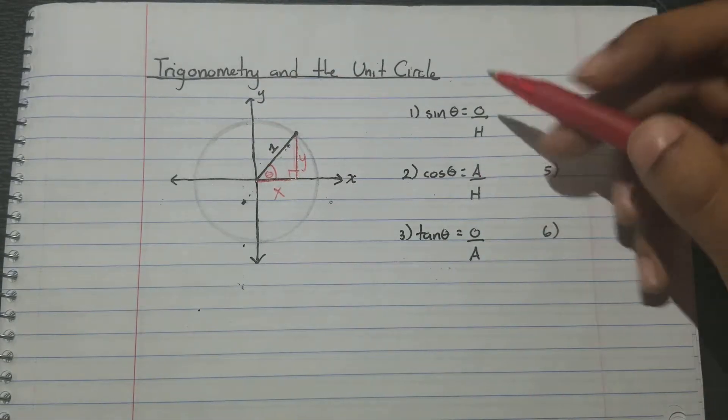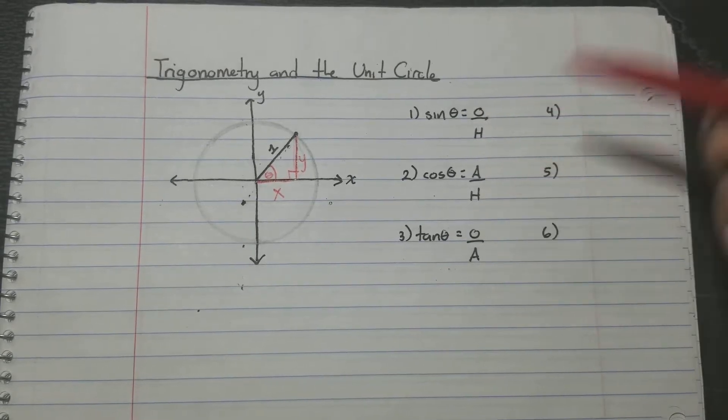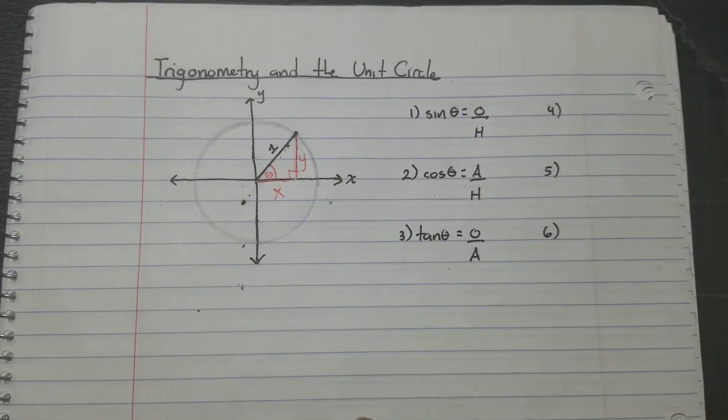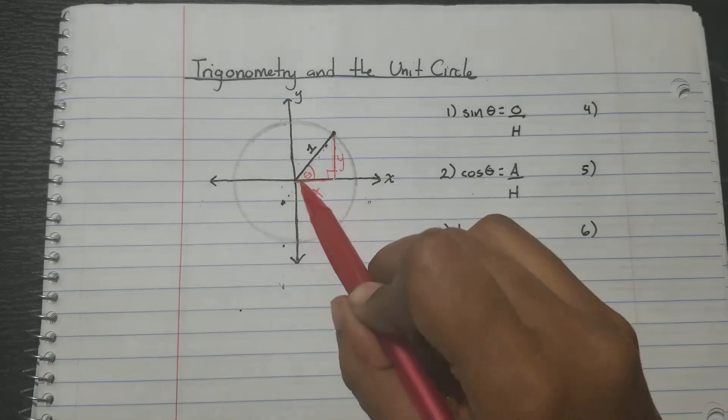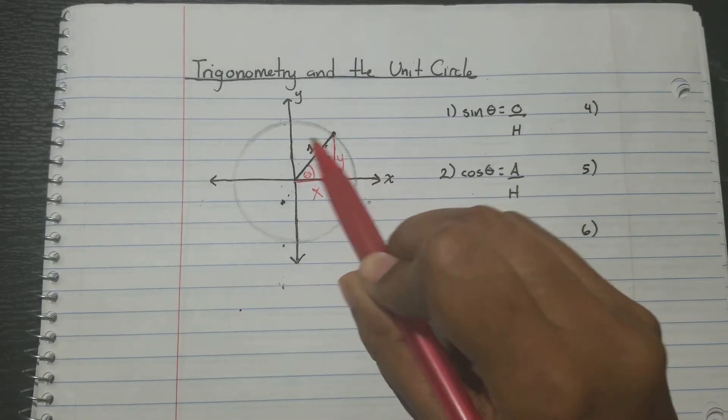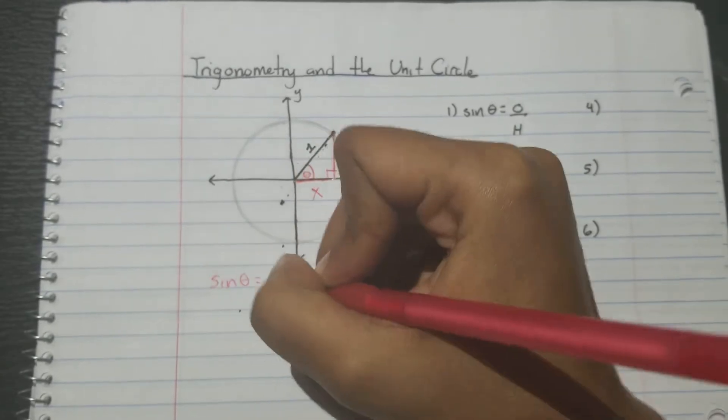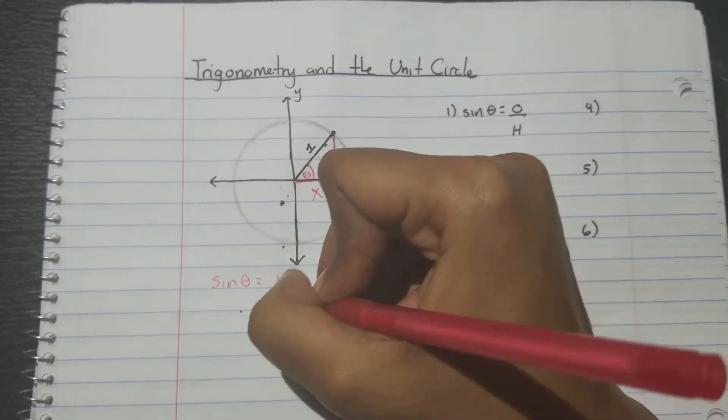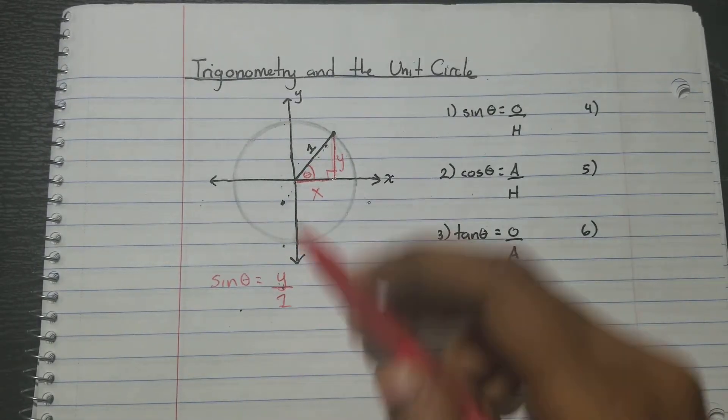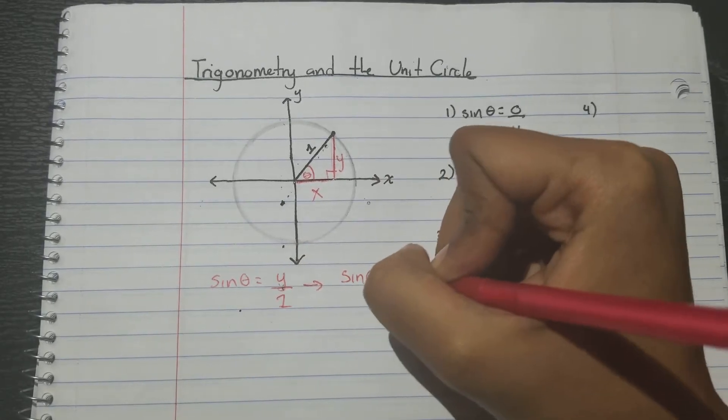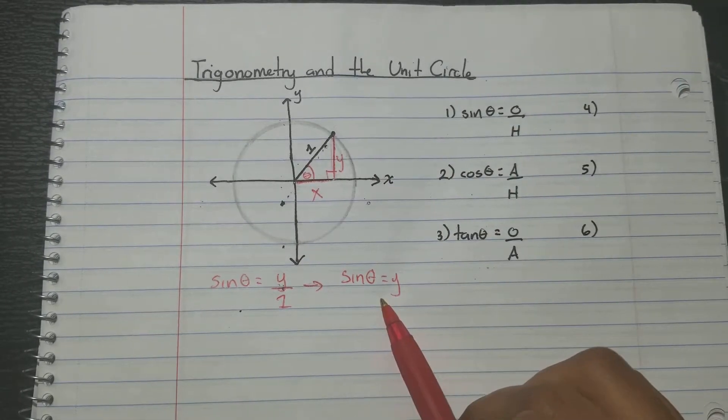Okay, so we know these ratios hold true for any right triangle. So let's start substituting. Sine theta is opposite, which is y, over hypotenuse, which is 1. Sine theta is y over 1. Now if we simplify that, we just get sine theta equals y.